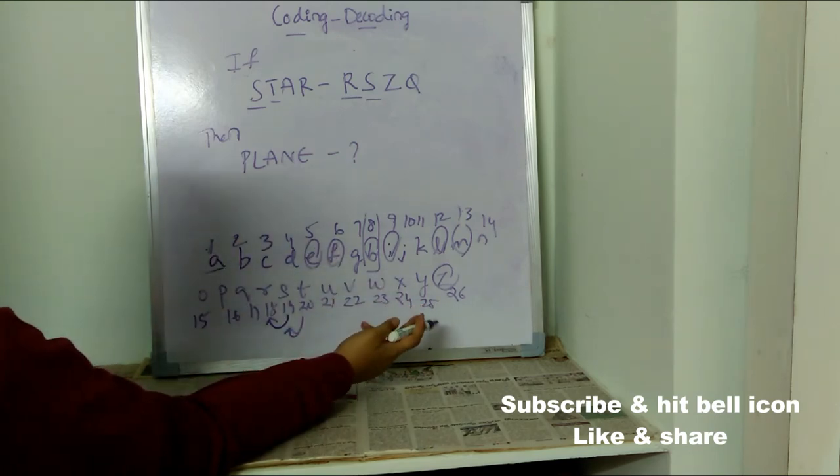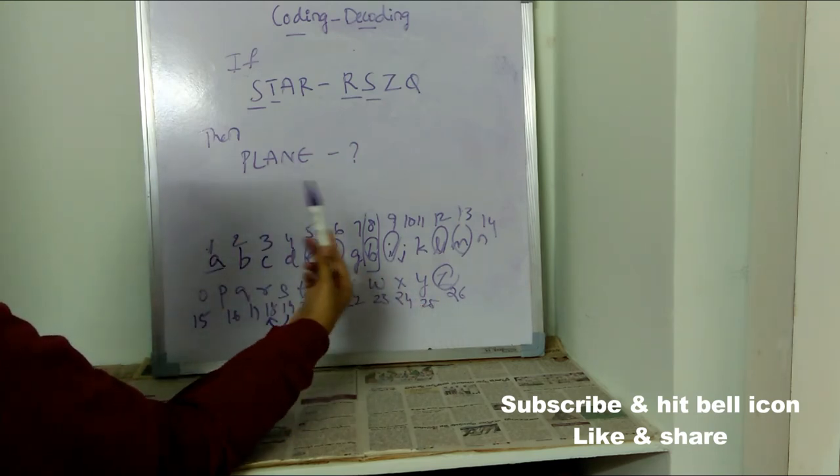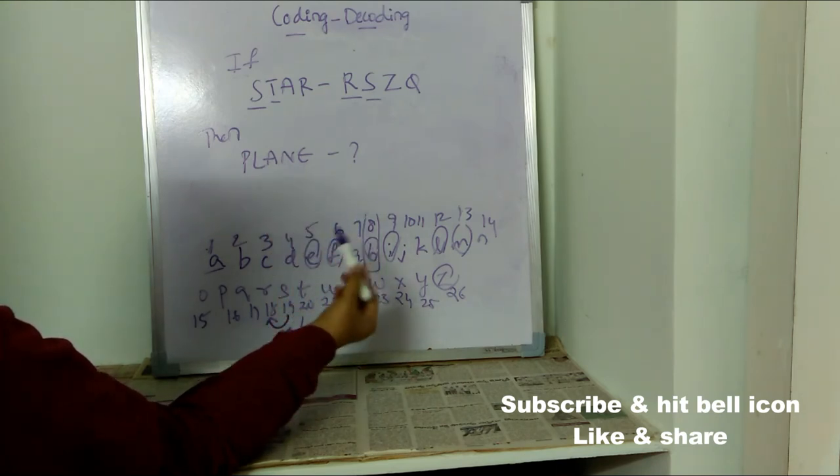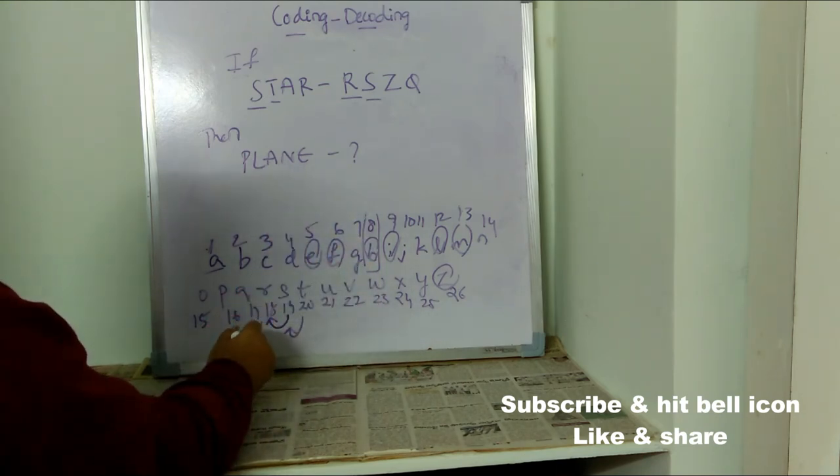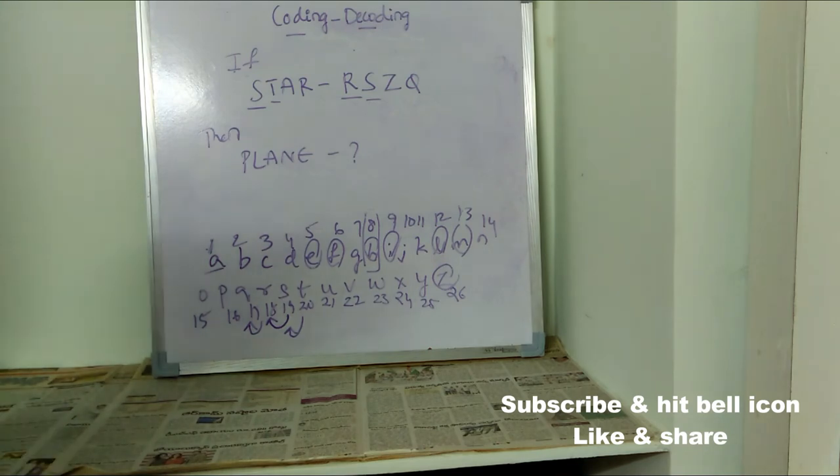And the relationship between R and Q: before R there is Q. So now we understood the logic. He is just moving one letter backward to code the original word. So now what we need to do? Take P.